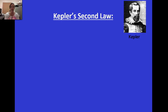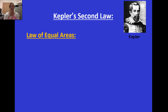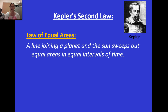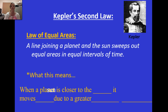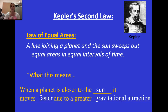We're talking about planetary motions in space and looking at Kepler's second law, which is the law of equal areas. The law of equal areas states that a line joining a planet and the sun sweeps out equal areas in equal intervals of time. This means that as a planet moves closer to the sun, it will move faster due to the greater gravitational attraction between the sun and that planet.